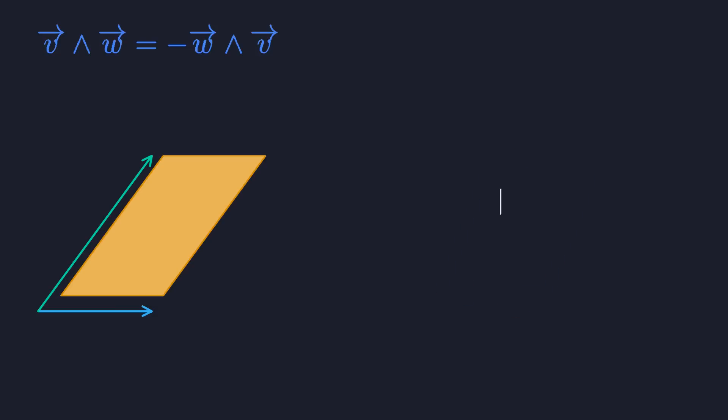The area of such a wedge product is given by a determinant. And hey, when you swap two columns of a matrix, the determinant changes its sign. So this is yet another example of anti-commutativity.